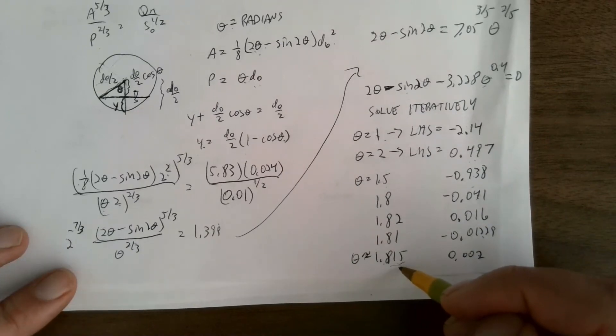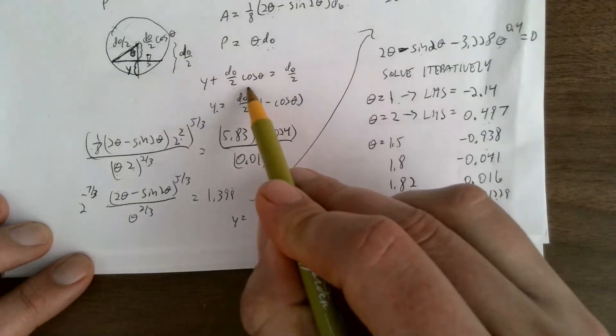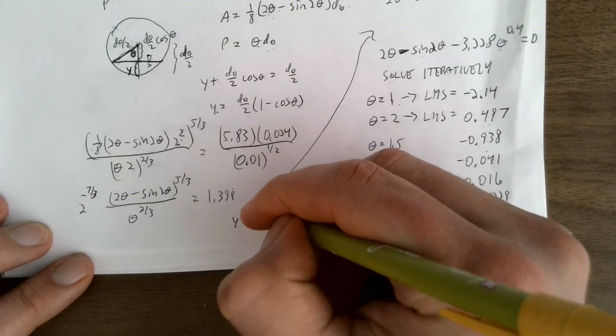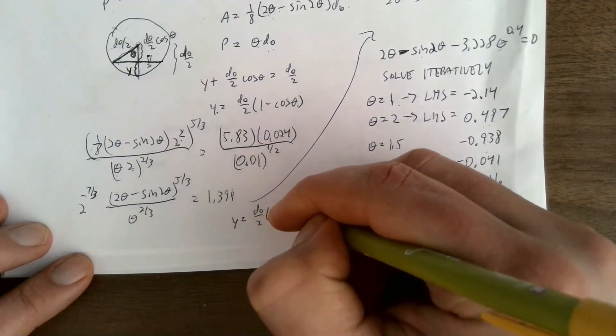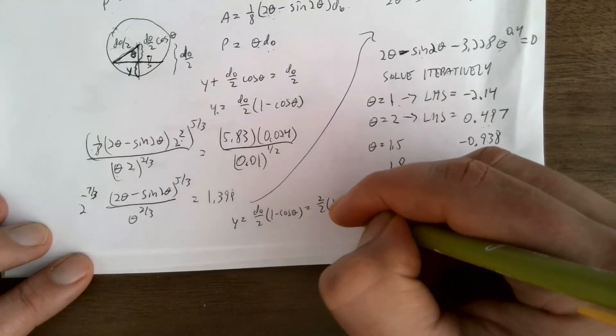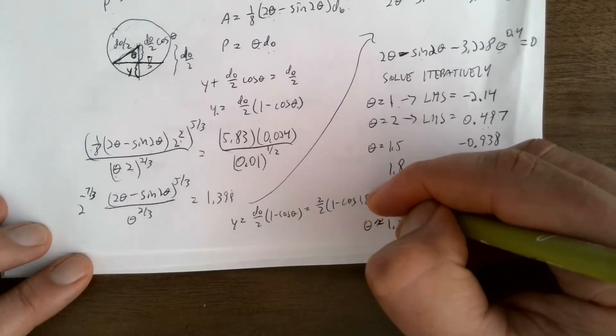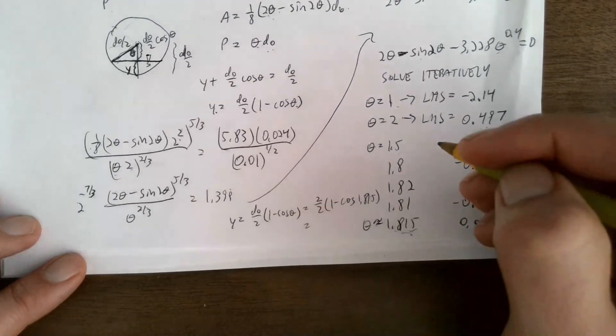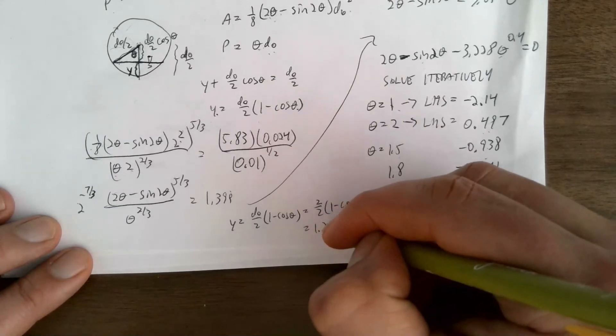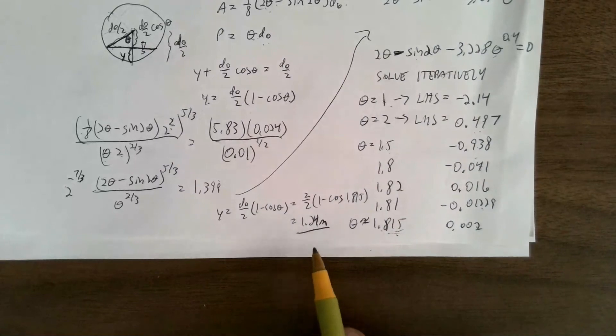And then give it the y value. So anyway, we figured out that theta was 1.815. And so then y is equal to, up here we said, d0 over 2, 1 minus cos theta. So 2 over 2, 1 minus cos 1.815 gives me 1.24 meters. 1.24 meters. That would be the depth of flow here.